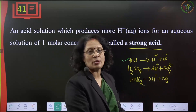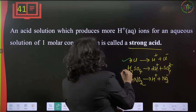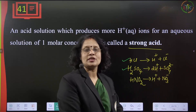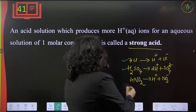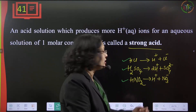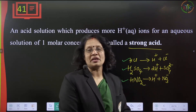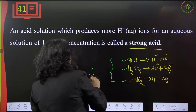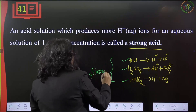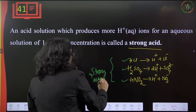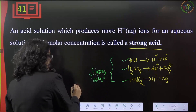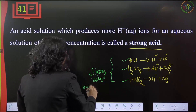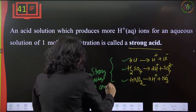For example, HCl is a strong acid — it ionizes completely, producing plenty of H⁺ and Cl⁻. Sulfuric acid gives plenty of H⁺ and SO₄²⁻ ions. Nitric acid gives plenty of H⁺ and NO₃⁻ nitrate ions. These are all strong acids because they ionize completely.